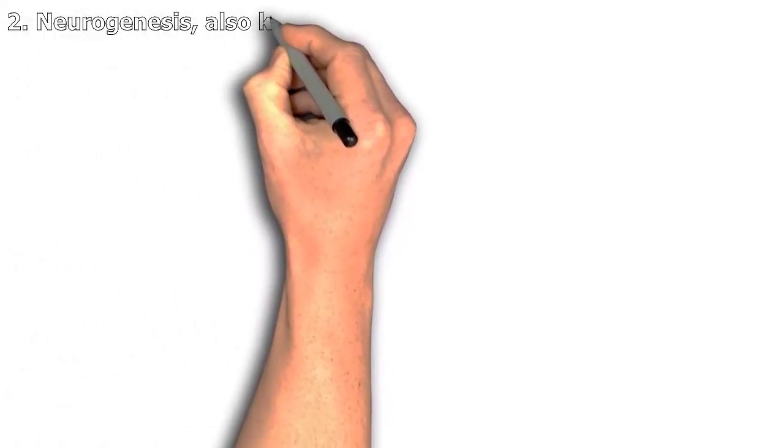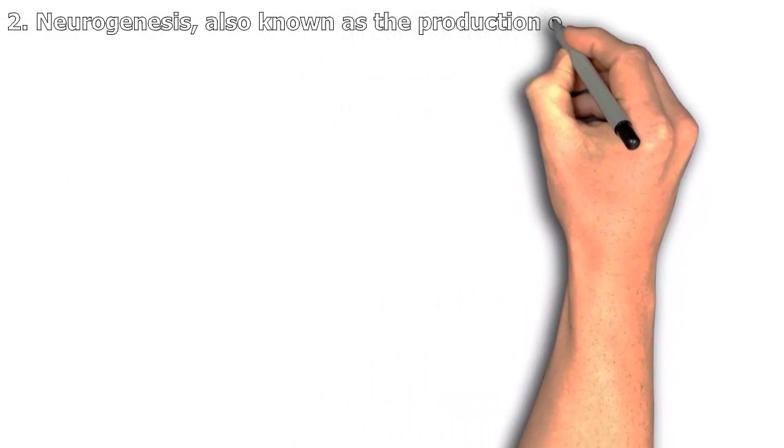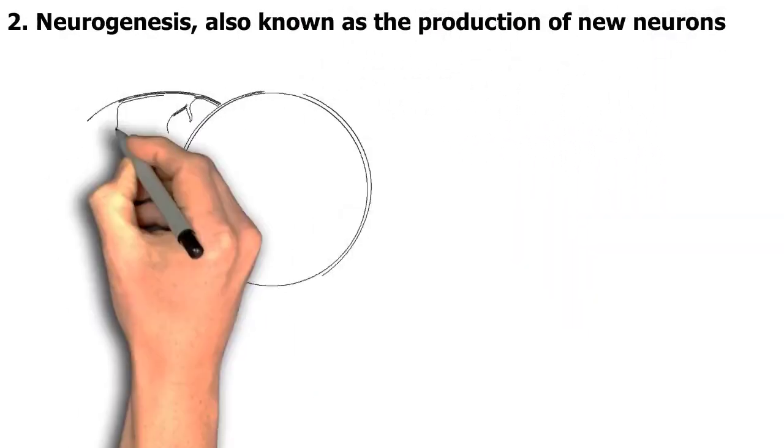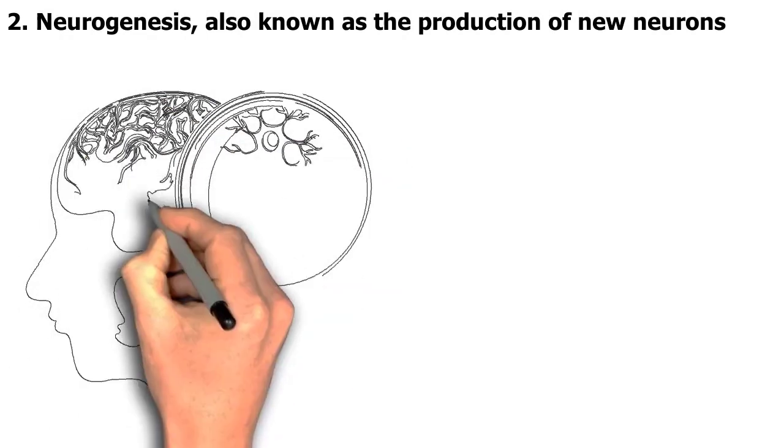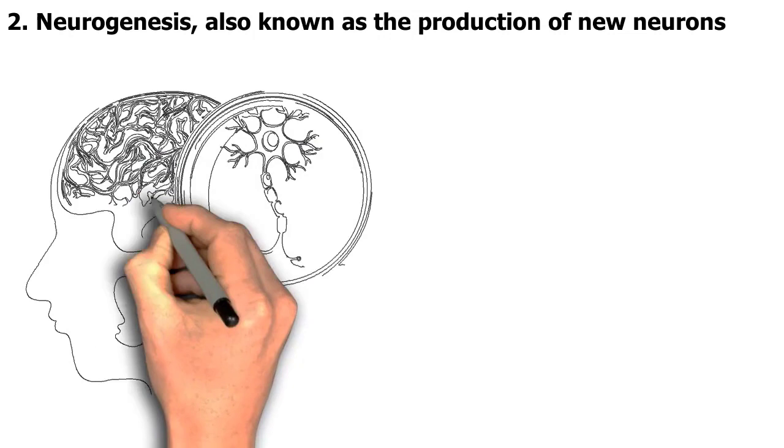2. Neurogenesis, also known as the production of new neurons, is a function of the brain. Given that the majority of the body's cells cannot regenerate and must be replaced by cell division, this is a surprising reality.